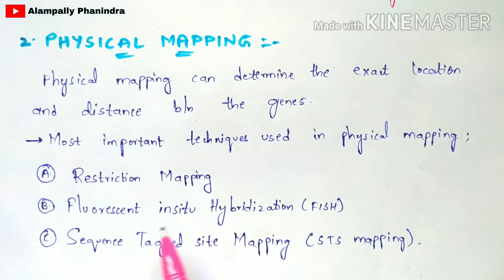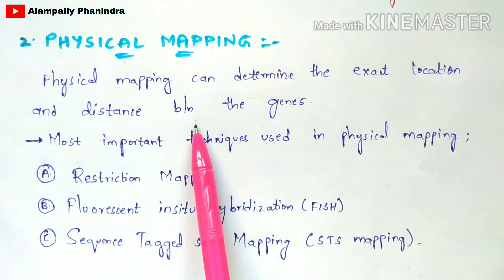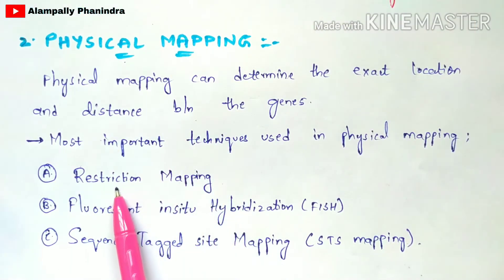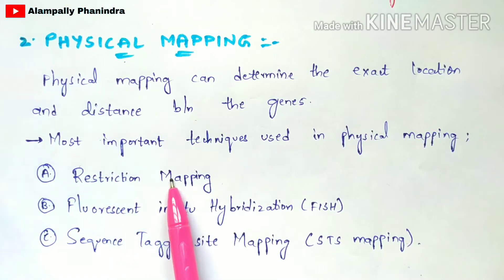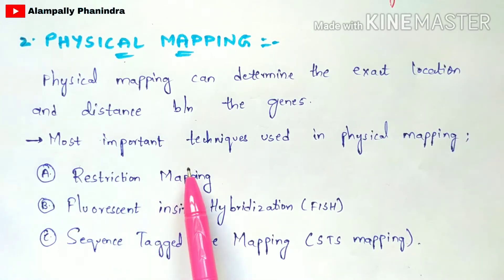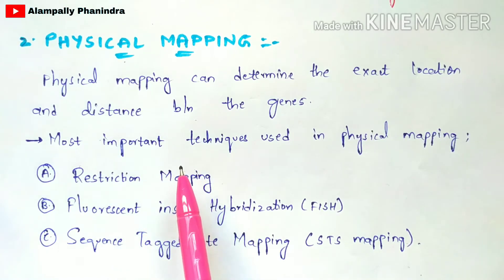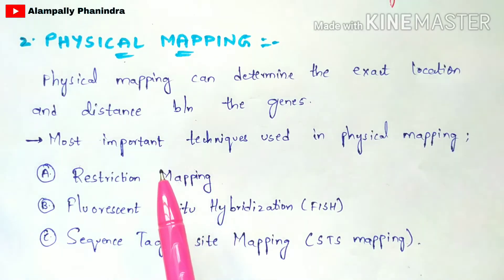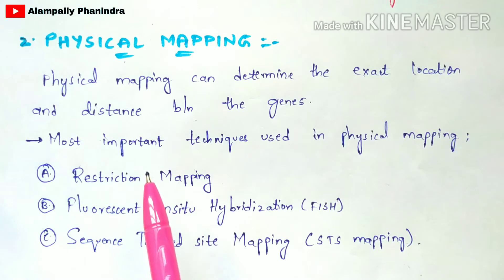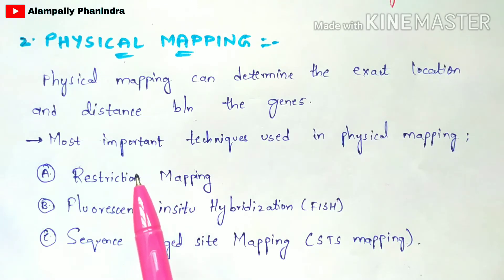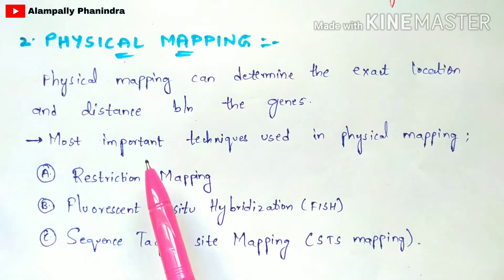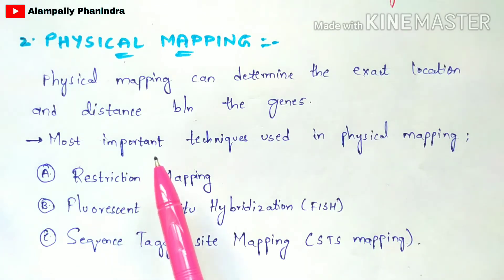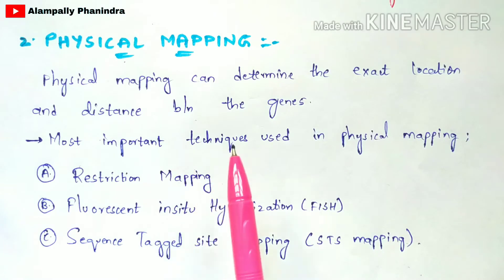In this video we are going to discuss about physical mapping and the types of physical mapping. In the previous video I explained gene mapping and the types of gene mapping. The first type I explained was linkage mapping, and today we are going to discuss about physical mapping.